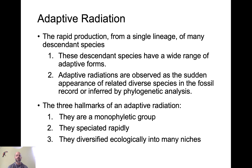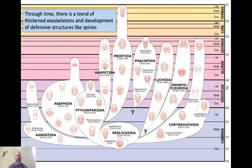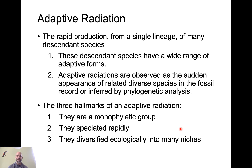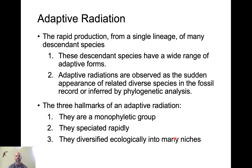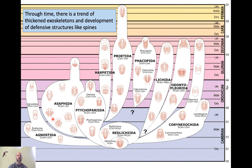An adaptive radiation is the rapid production from a single lineage of many descendant species. Using the trilobites as an example: one ancestral lineage gave rise to many different species in a short period of time. The descendant species have a wide range of adaptive forms, and adaptive radiations are observed as the sudden appearance of related diverse species in the fossil record, or inferred by phylogenetic analysis. The three hallmarks of an adaptive radiation are: they are monophyletic — all descended from the same ancestor; they speciate rapidly; and there is ecological diversification into many niches and different ecological roles.